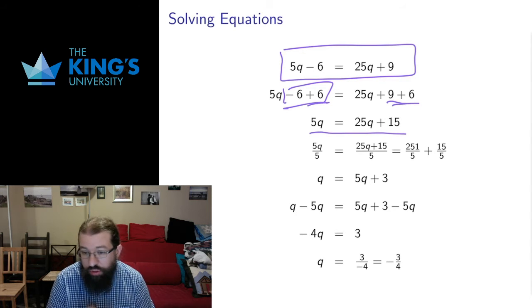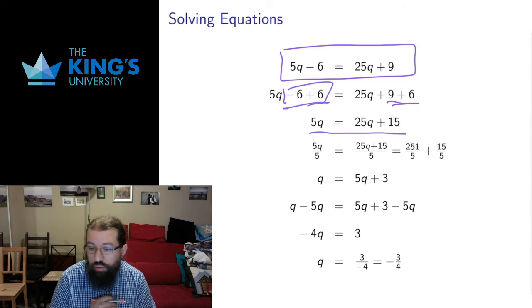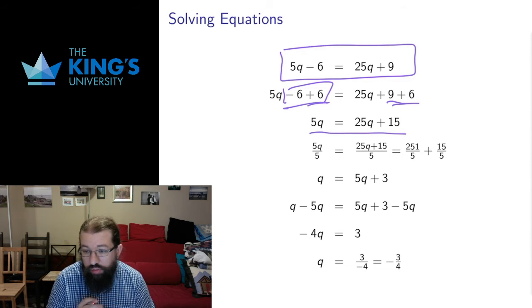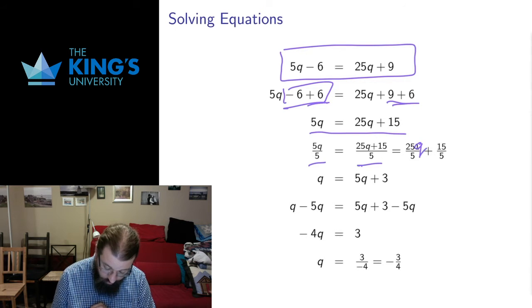Now I can notice that a lot of my things are divisible by 5. I'd also like to get rid of the 5 in front of my variable q. So I can divide everything by 5. Divide the left side by 5, divide the right side by 5.